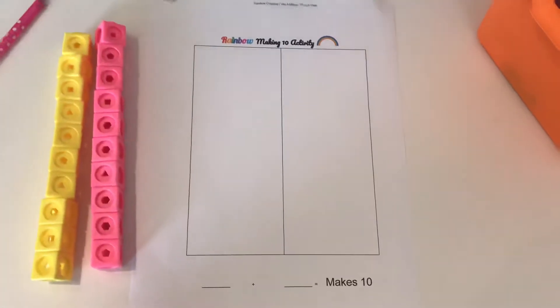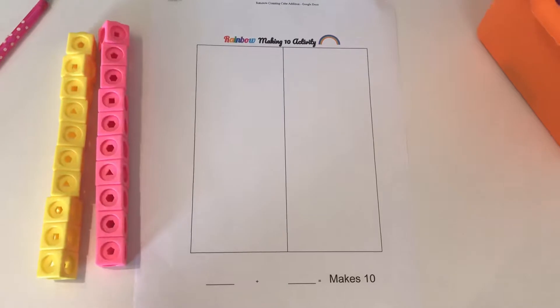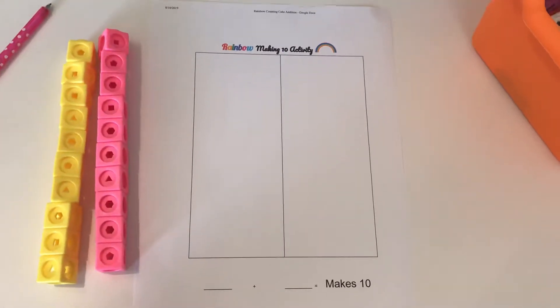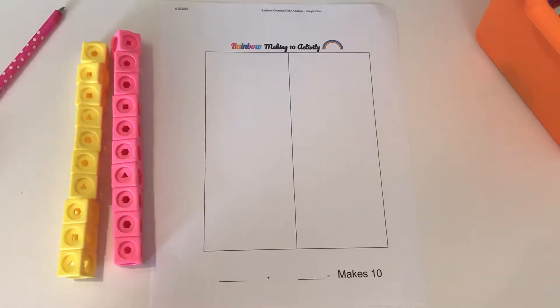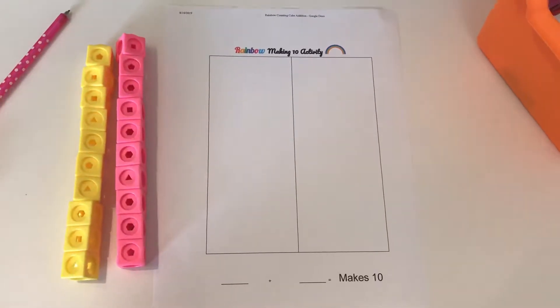Today we are looking at this rainbow making 10 activity. I just created this quick simple Google Doc and made it available for you guys as a free PDF on my site. I like it just because it's simple and goes straight to the point.